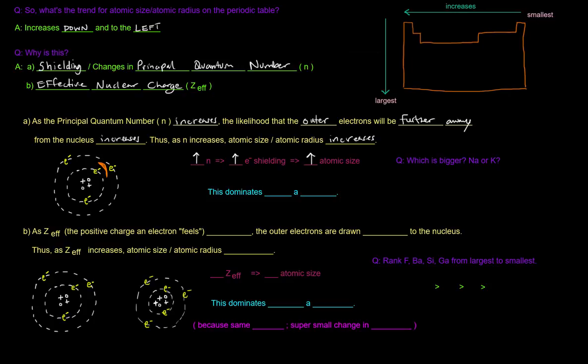Now this concept of principal quantum number and shielding, this dominates when you're thinking about the trend up and down. So this dominates down a group.